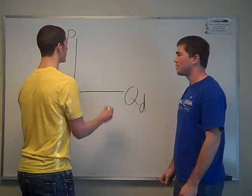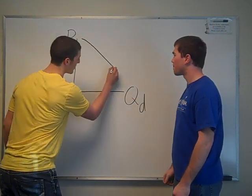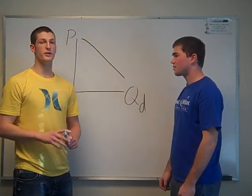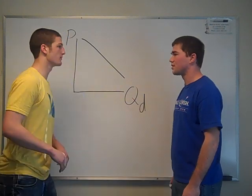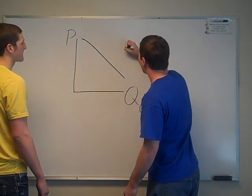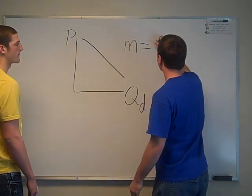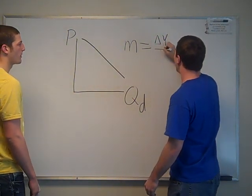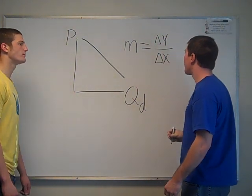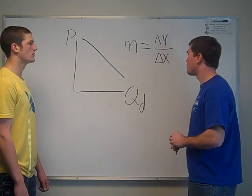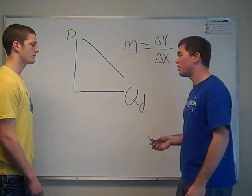The relationship between price per unit and quantity demanded is linear and also negative because we assume a constant tradeoff for outputs. The slope represented by M equals the change in Y over the change in X. In this case, change in Y over change in X would be represented by the price over the quantity demanded.